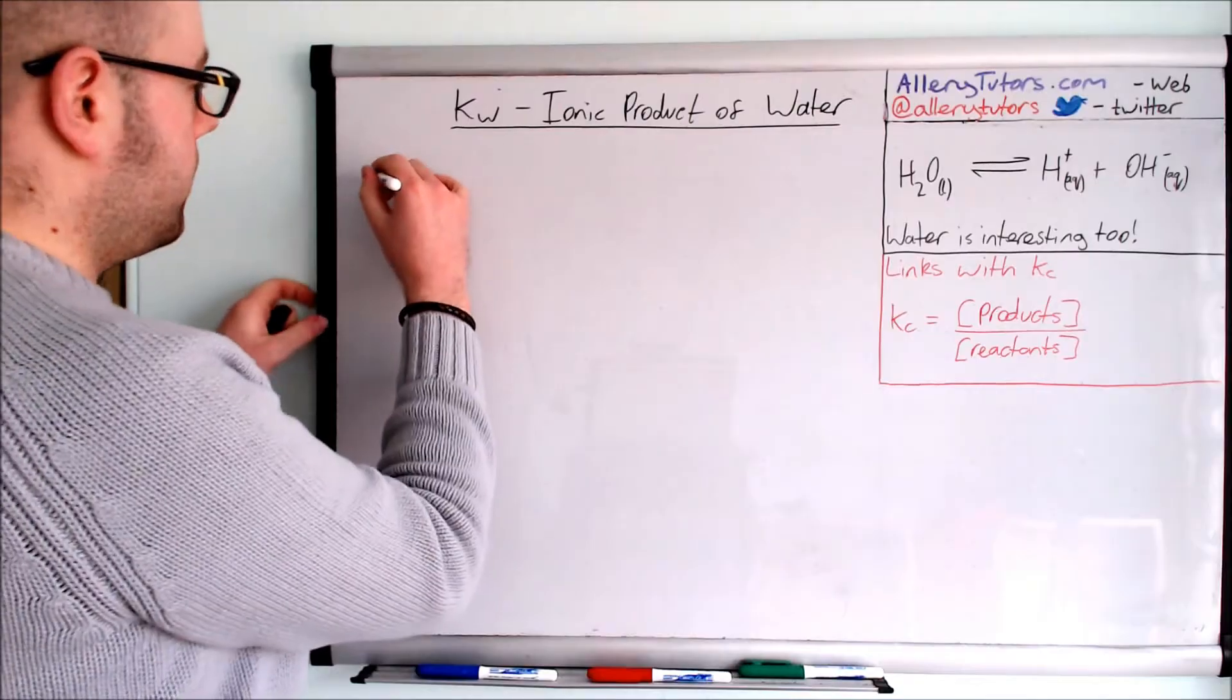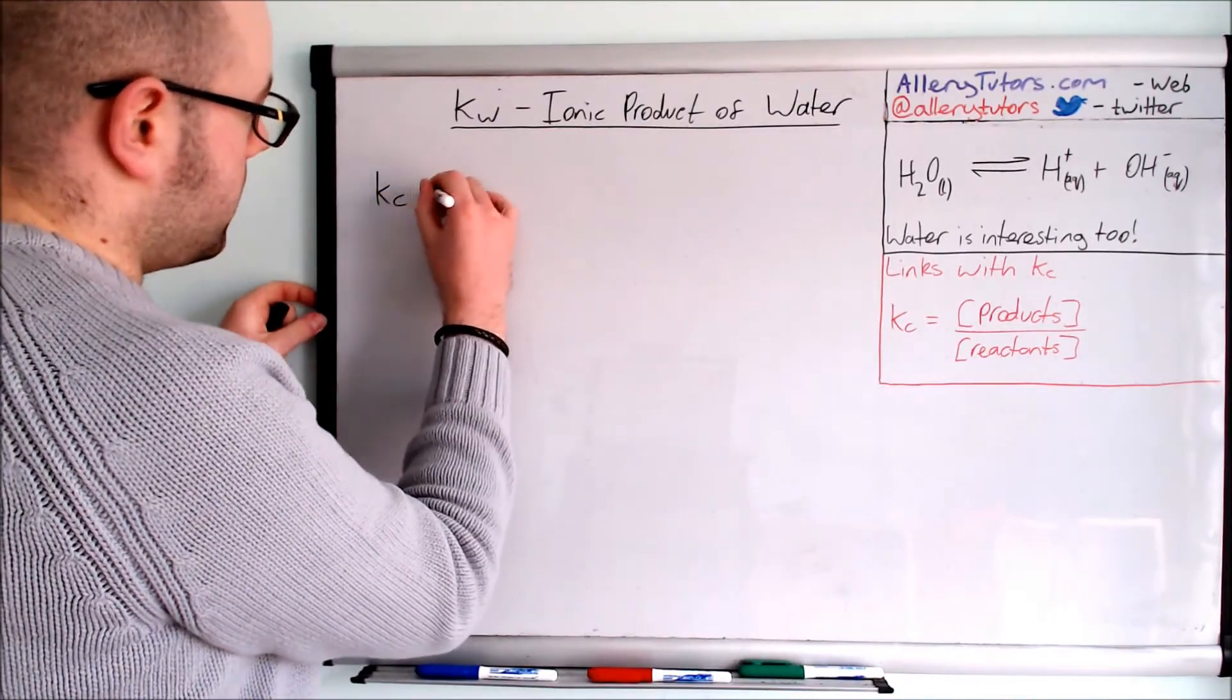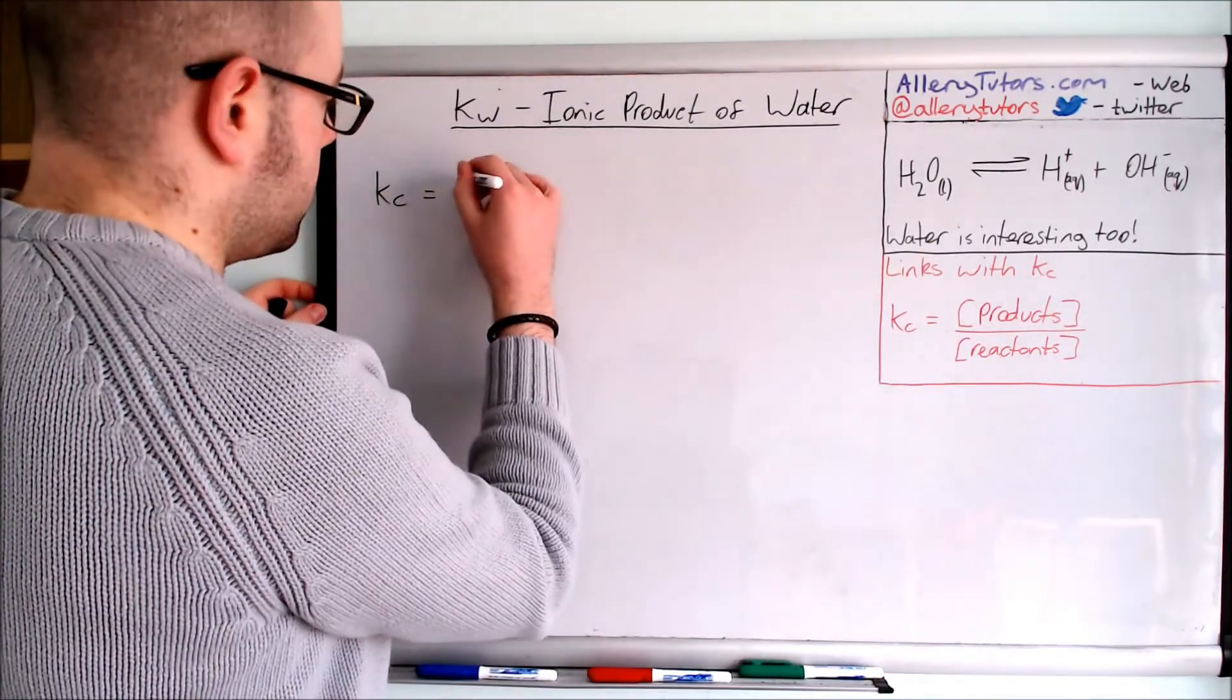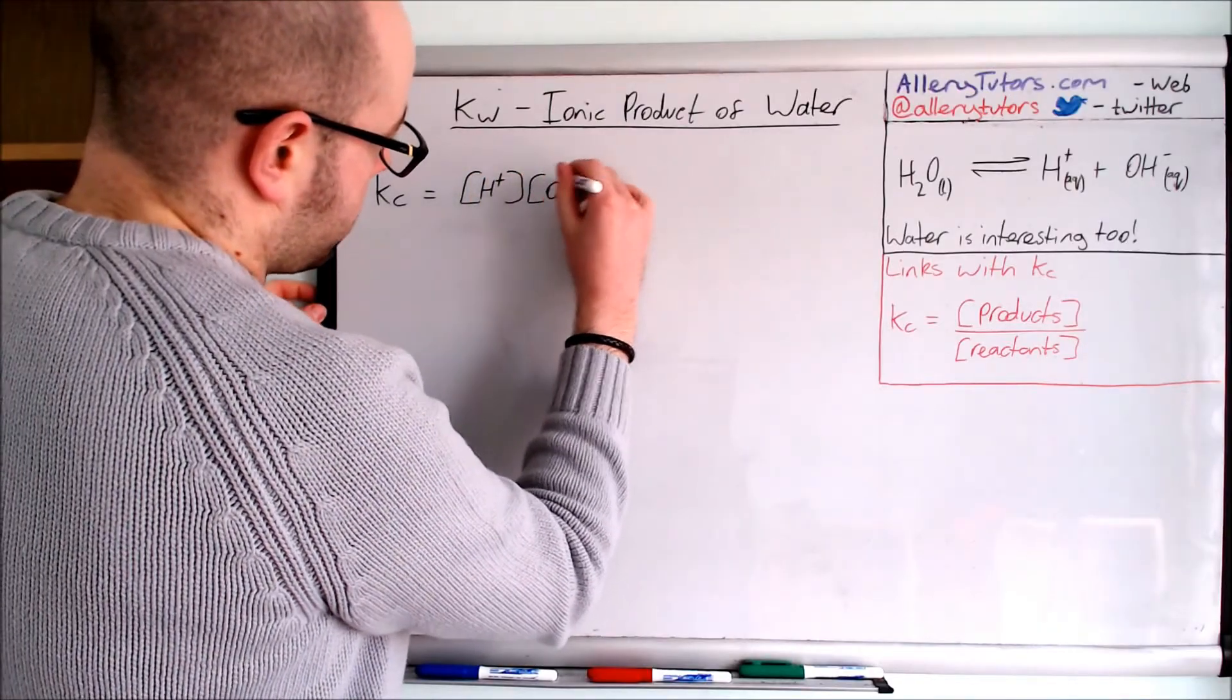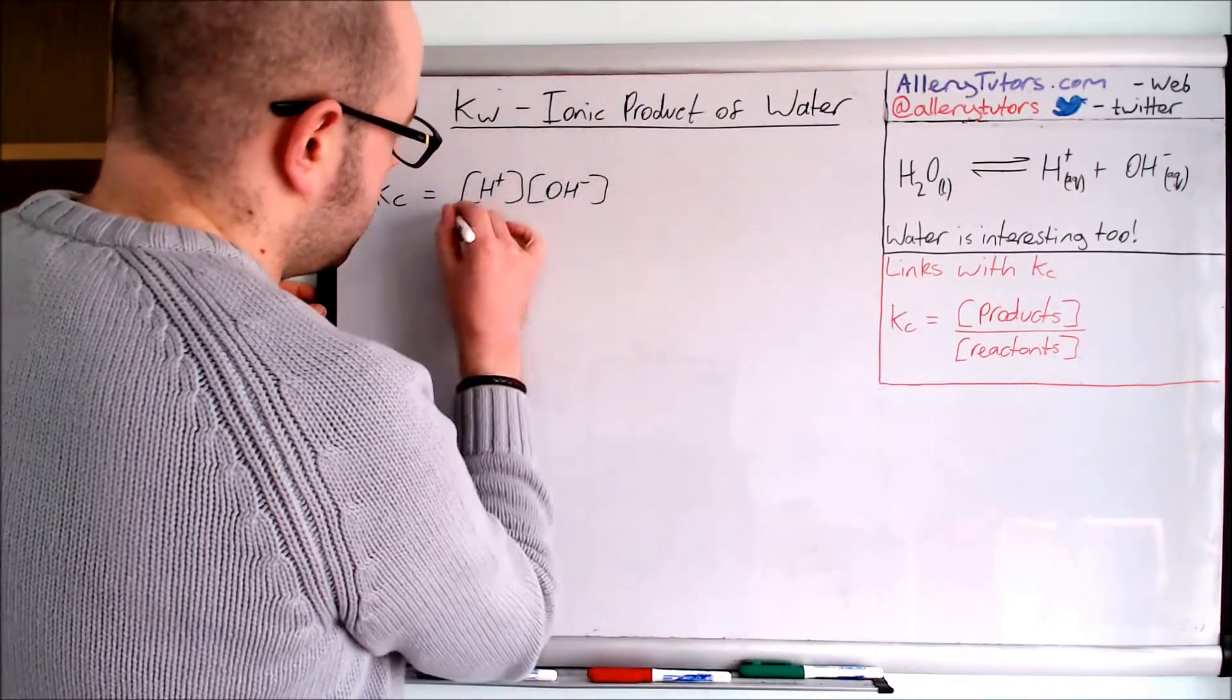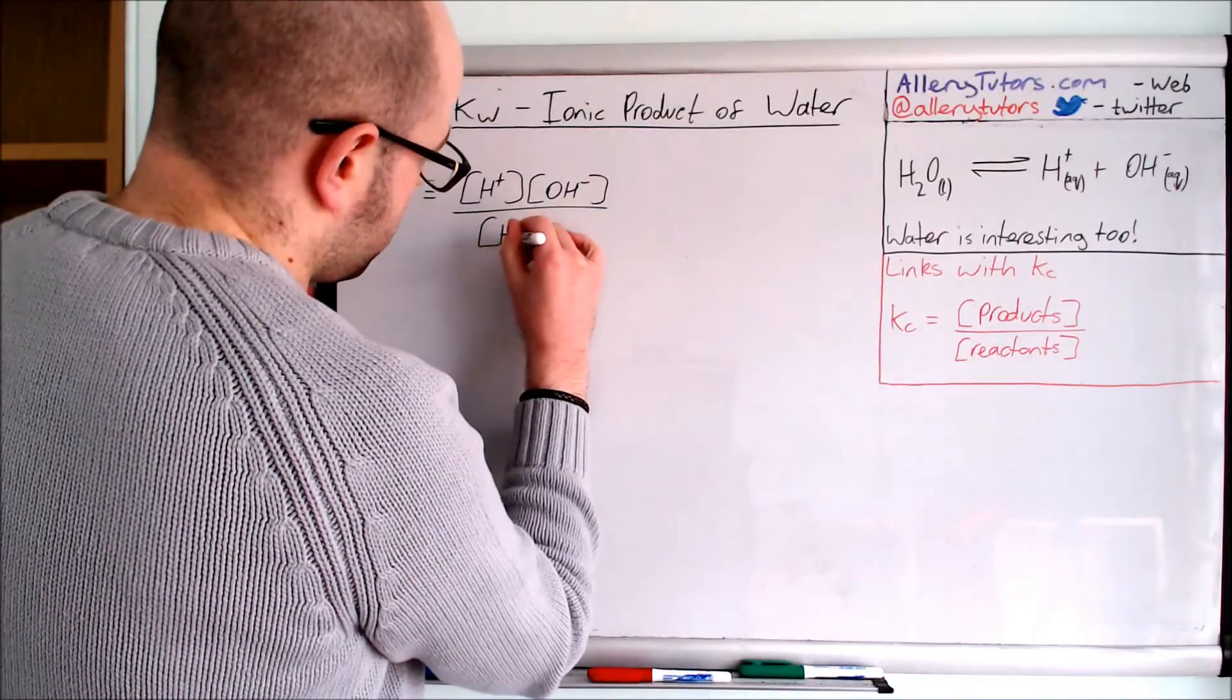So Kc equals the concentration of H plus multiplied by the concentration of OH minus, divided by the concentration of H2O.